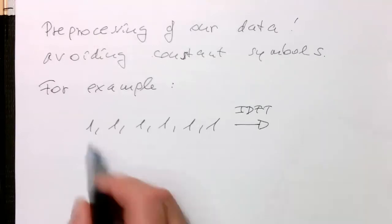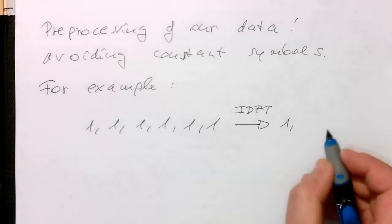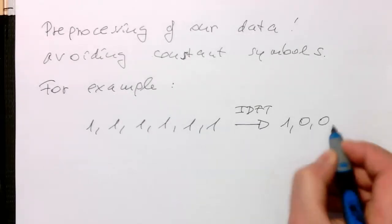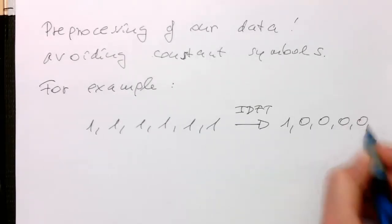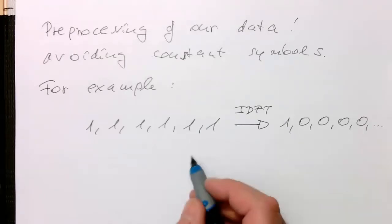then we've got all frequency in it and this gives us in the time domain just a delta pulse and then the rest is zero and so on. So obviously this won't work.